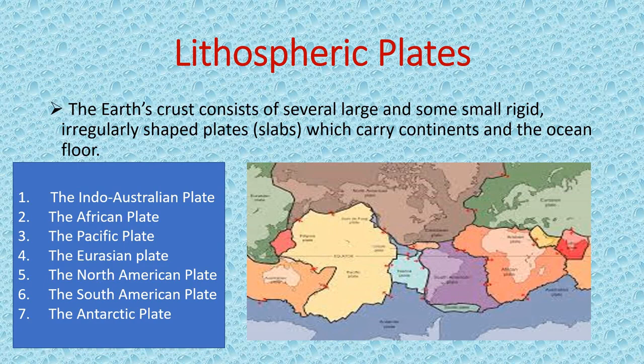The seven lithospheric plates are: first, the Indo-Australian plate; second, the African plate; third, the Pacific plate; fourth, the Eurasian plate; fifth, the North American plate; sixth, the South American plate; and seventh, the Antarctic plate. These lithospheric plates move very slowly, just a few millimeters every year.